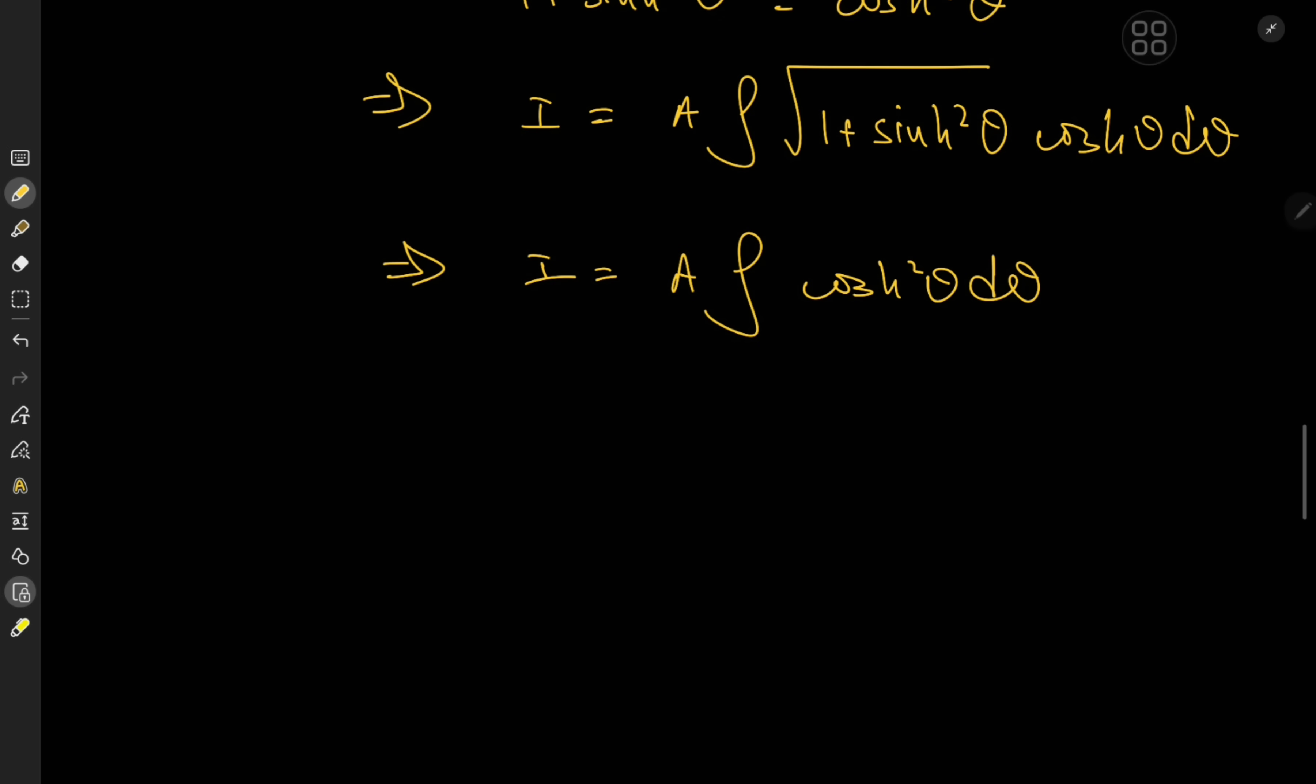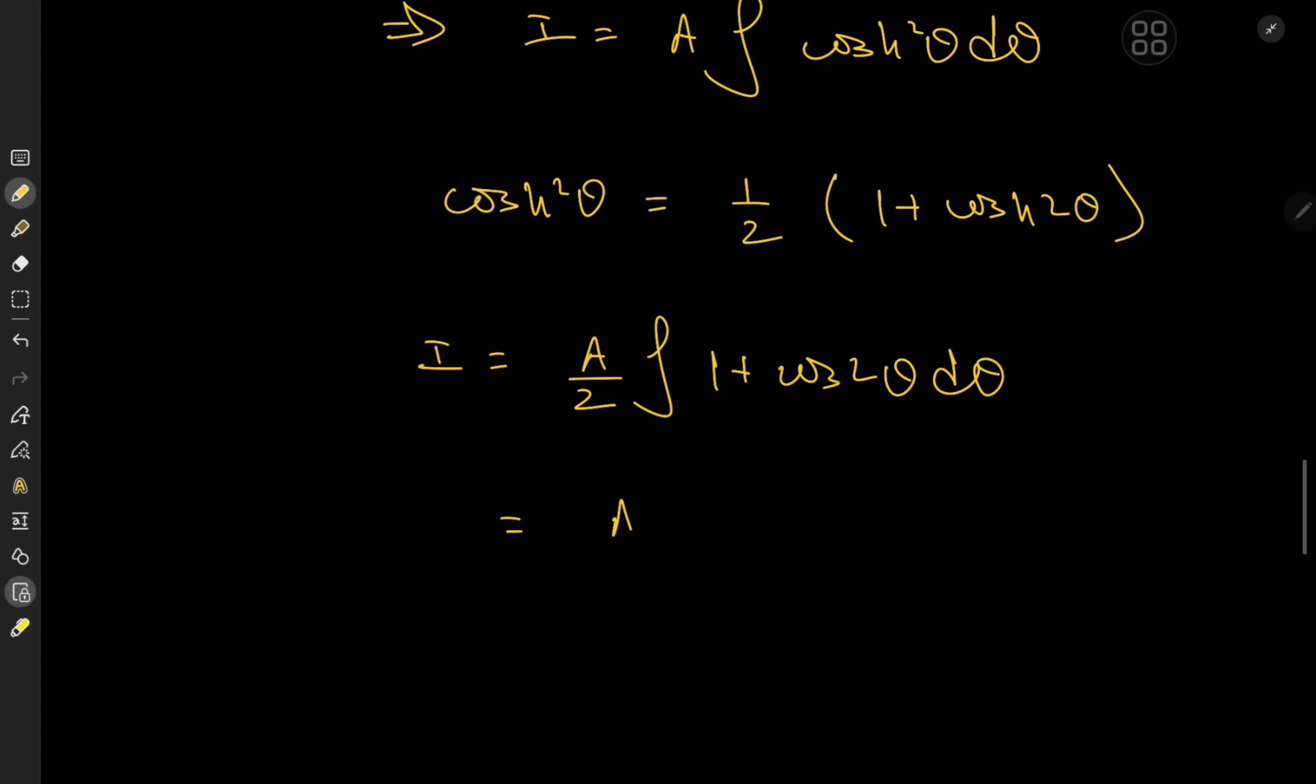Okay, cool. And now for some hyperbolic trig identities. So cosh² theta can be expanded as one half of, if I remember correctly, 1 + cosh 2theta. So this means that I here is now a/2 times the integral of (1 + cosh 2theta) d theta, which is quite straightforward to integrate. We now have a/2 times (theta + sinh 2theta/2).